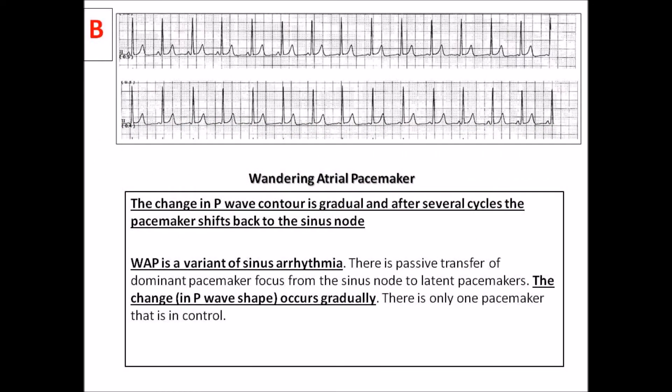Wandering atrial pacemaker, or WAP, is a variant of sinus arrhythmia. There is passive transfer of the dominant pacemaker focus from the sinus node to latent pacemakers. The change in P-wave shape occurs gradually, and there is only one pacemaker in control at a time. It is recognized on the surface EKG by a gradual change in P-wave contour, and after several cycles, the pacemaker shifts back to the sinus node. Now, do not confuse WAP with multifocal atrial rhythm.